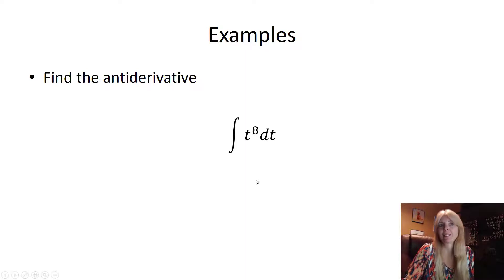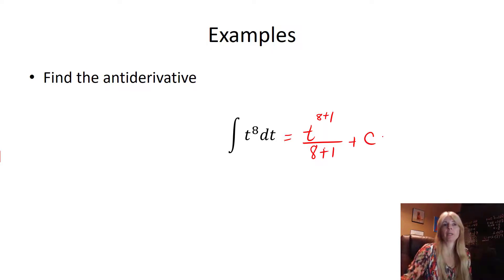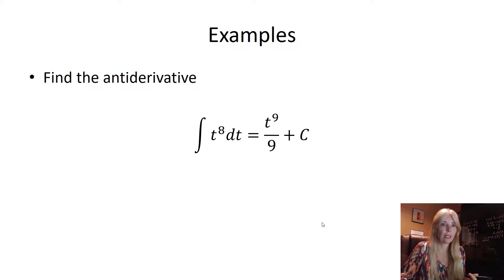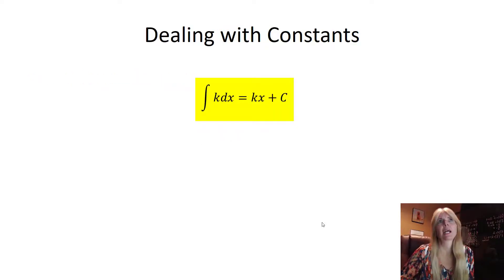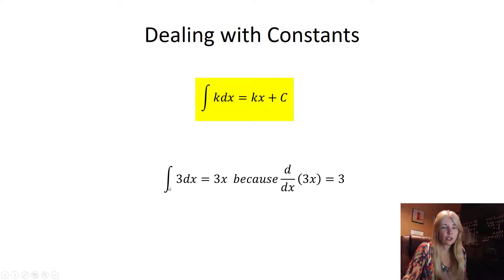For example, the antiderivative of x⁵ is x⁶/6, since 5 + 1 over 5 + 1, plus C. For t⁸: take 8 plus 1 over 8 plus 1, plus C — giving t⁹/9 + C. That's the backwards power rule: instead of subtracting 1 and bringing it down, we add 1 and divide by that value. For a constant like 3, the antiderivative of 3 dx is 3x, since the derivative of 3x is 3.